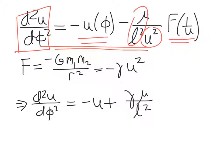So in the case of gravity, the force function is G times the product of two masses divided through by the radial distance between the masses squared. And so if we convert Gm1m2 into a constant gamma, we can rewrite 1 over r squared as just u squared.